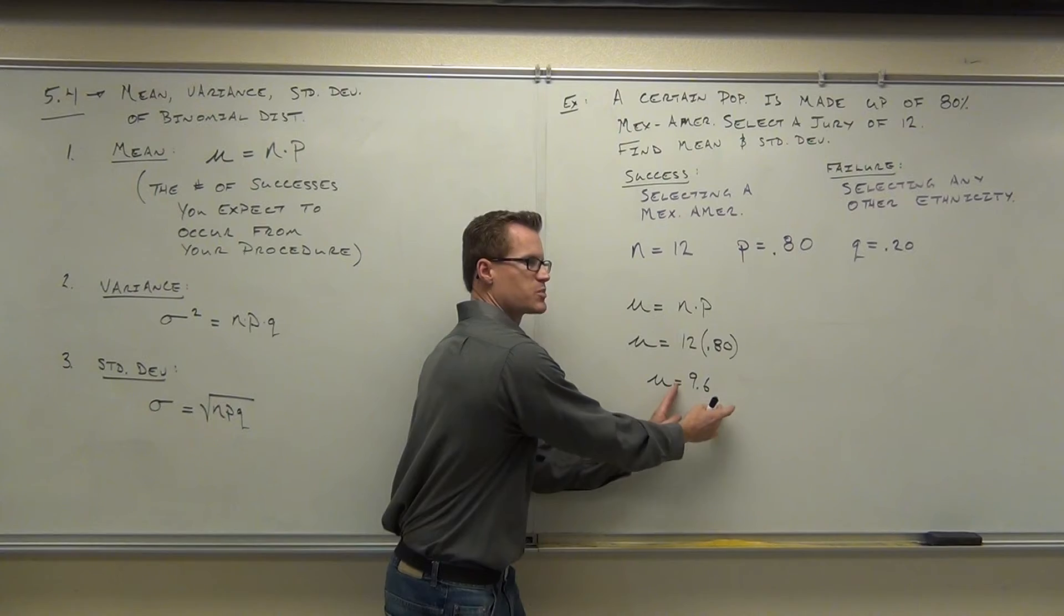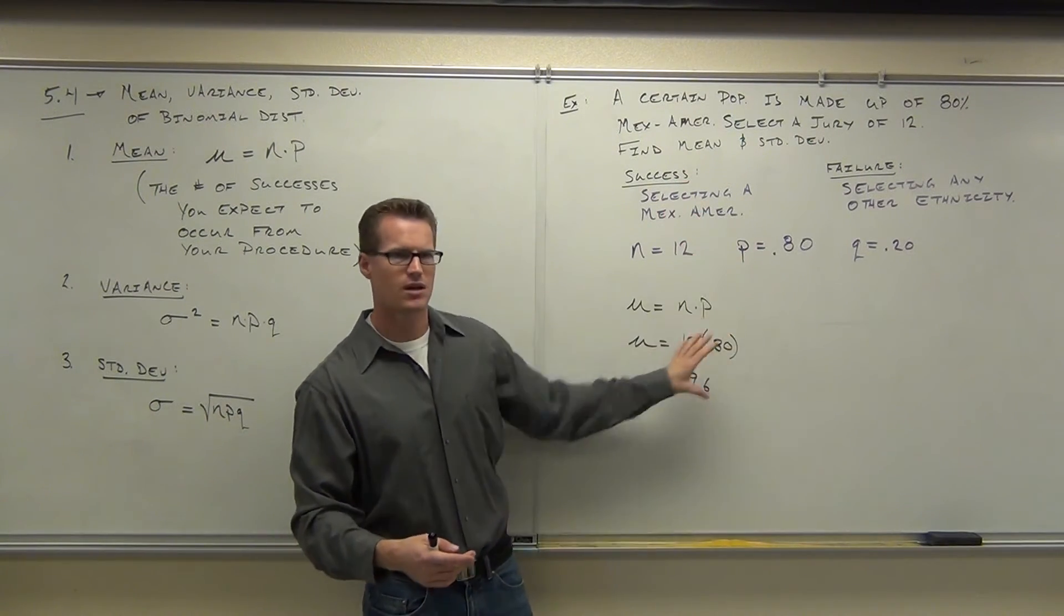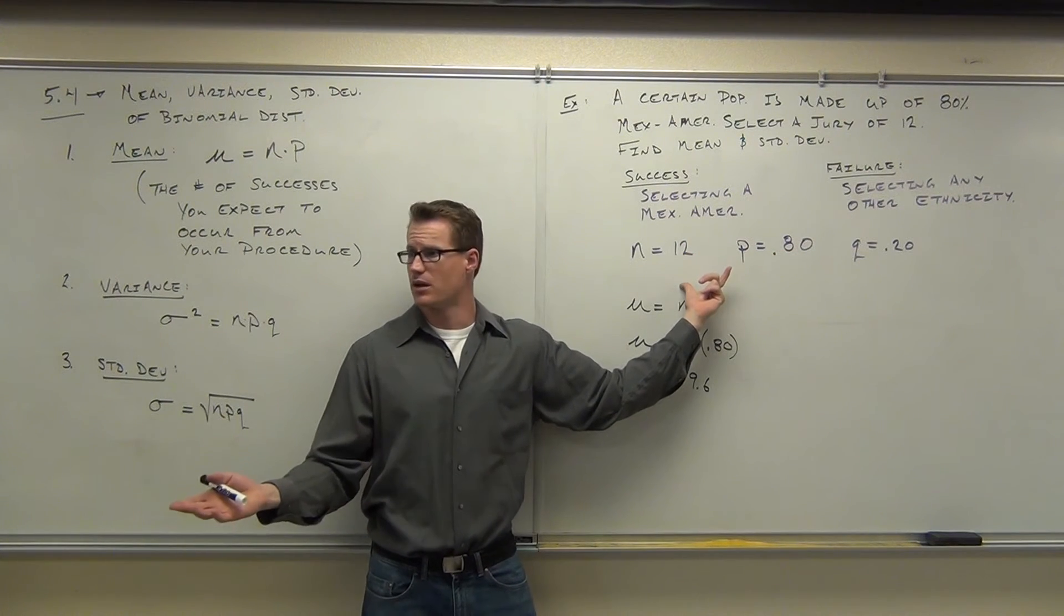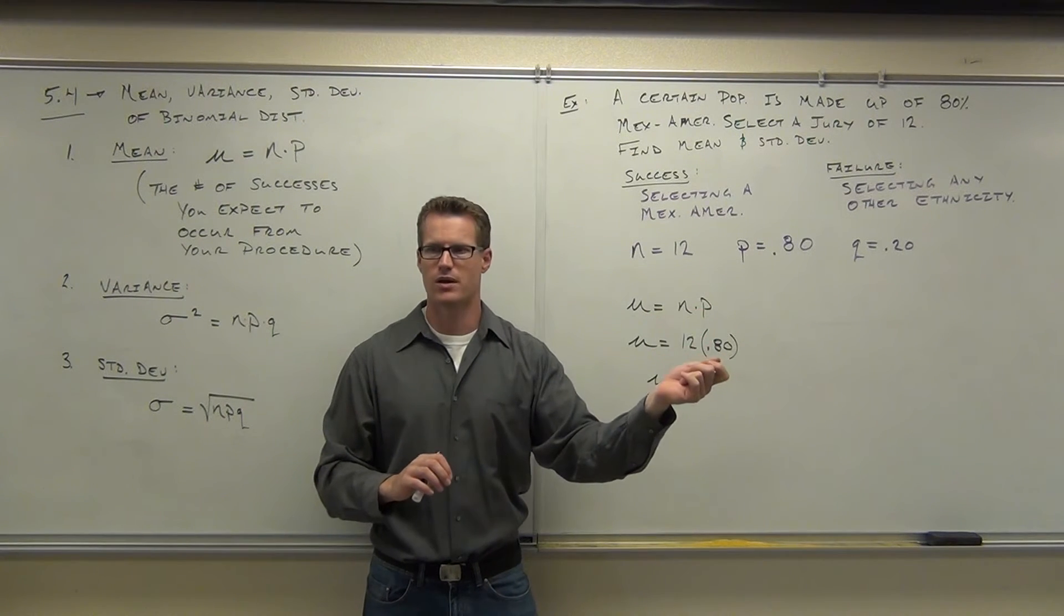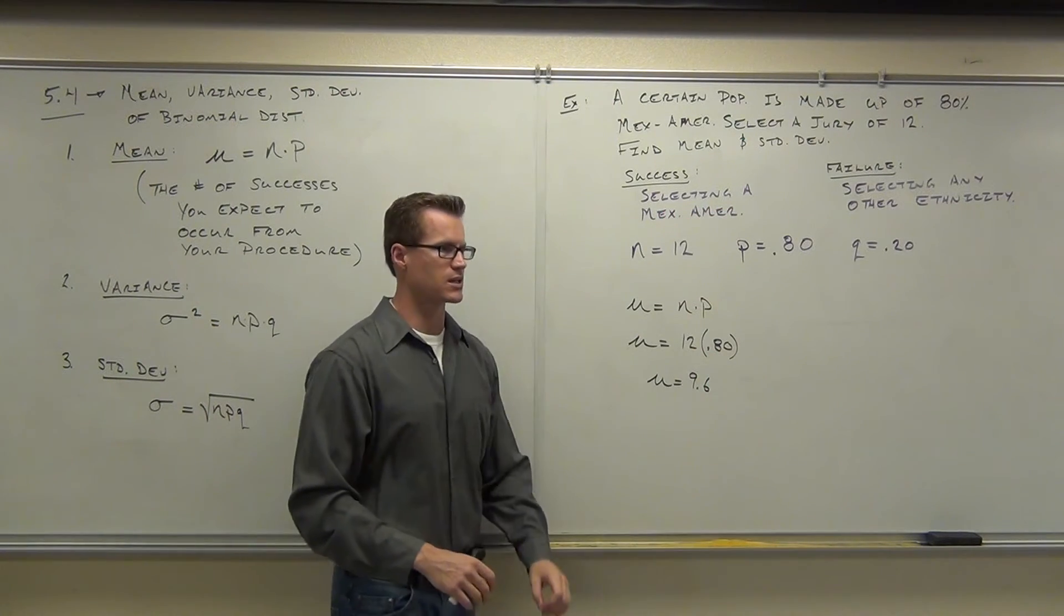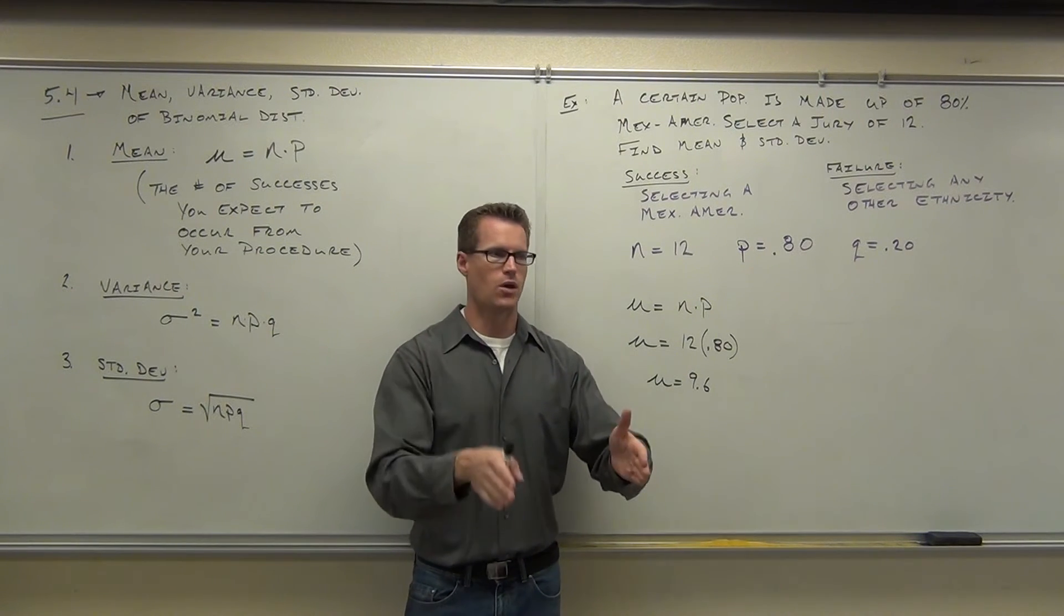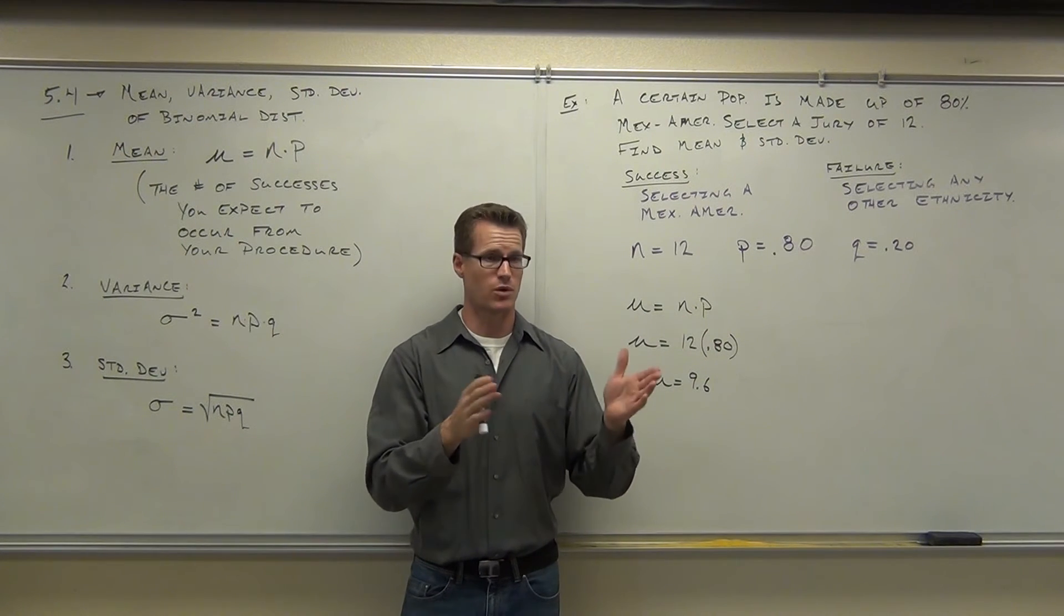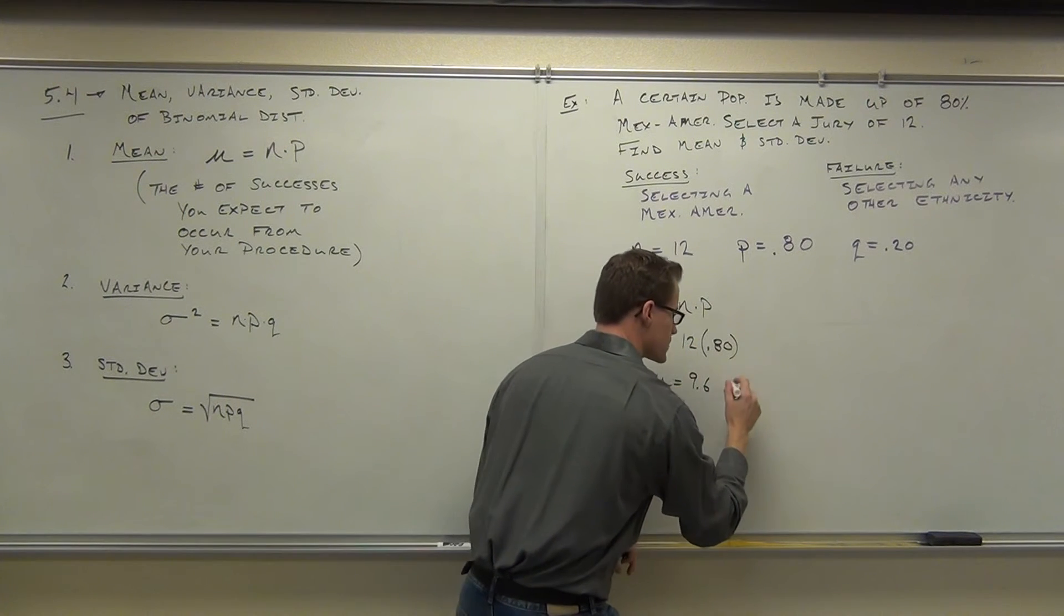Remember that this is all based on success. So what this is saying is you should expect in this situation to have, this has nothing to do with Mexican-Americans, right? This is just based on the probability of success and the number of trials you're doing. So this says you should have 9.6 successes. Whatever you're talking about here, you should have 9.6 successes. About 9.6 successes.